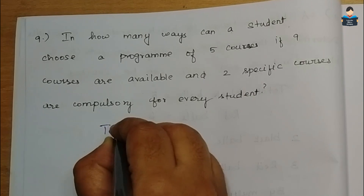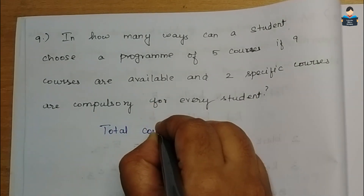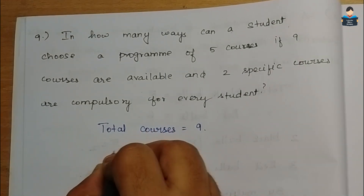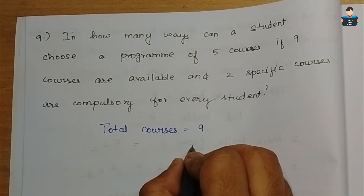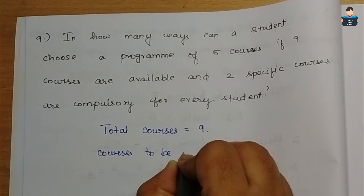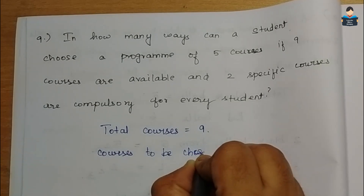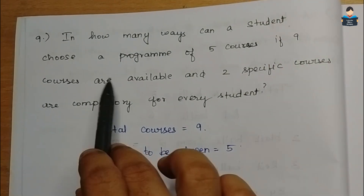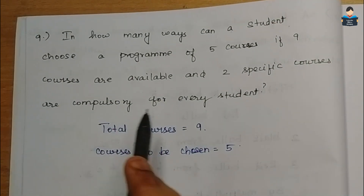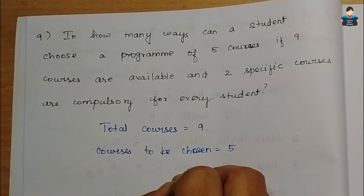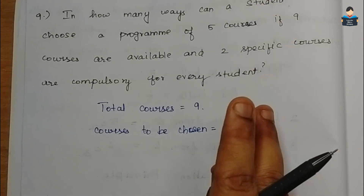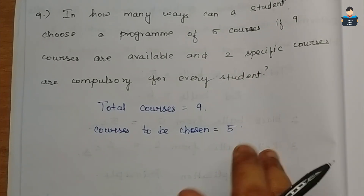Total courses available are 9. A student must choose 5 courses. If 9 courses are available and 2 specific courses are compulsory, then the student must include those 2 compulsory courses in the 5 chosen.